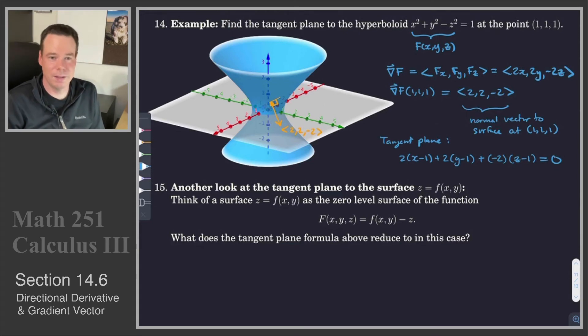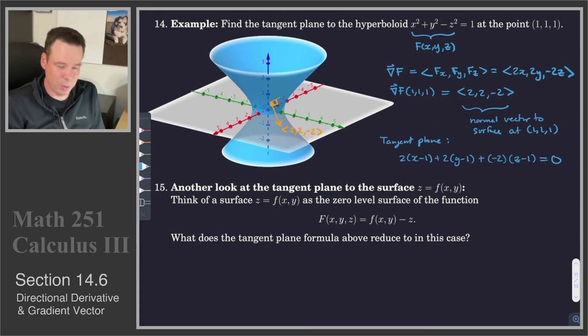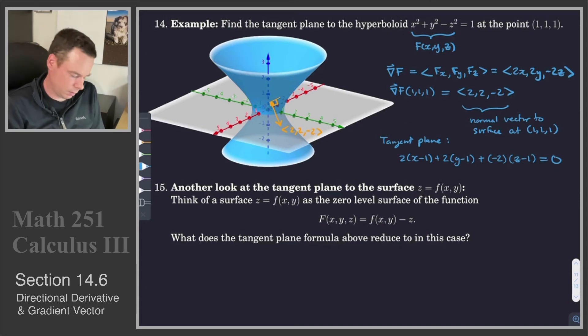That's all we need — just the normal vector and the point — to find the tangent plane. So the tangent plane is given by 2 times (x minus 1) plus 2 times (y minus 1) plus negative 2 times (z minus 1) equals zero. Very quick to get the equation of the tangent plane now that we have the gradient vector and know its geometric properties.